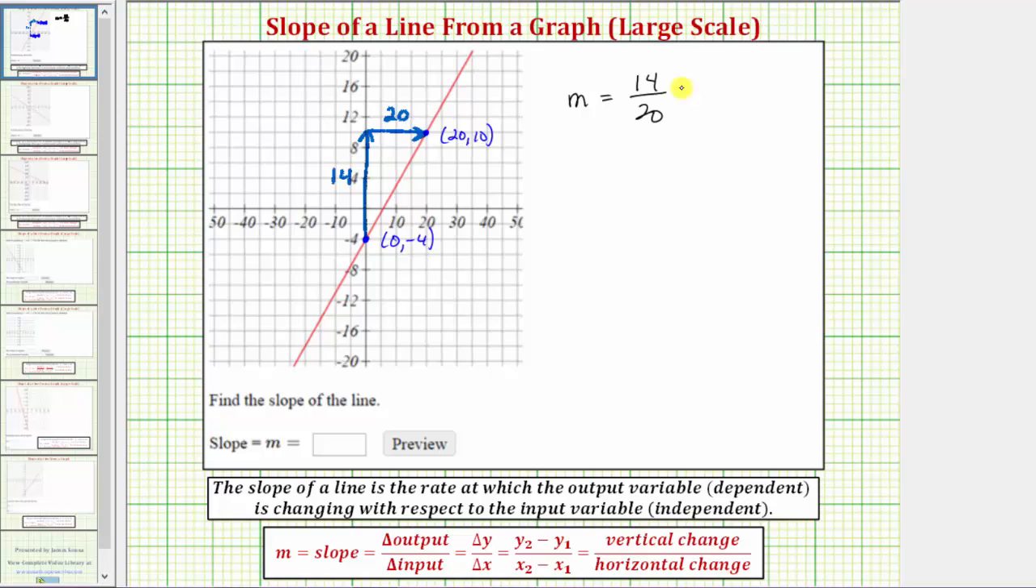Like any fraction, we should simplify this as much as possible. There's a common factor of two here. 14 divided by 2 is 7, and 20 divided by 2 is 10, and therefore the slope is 7/10.